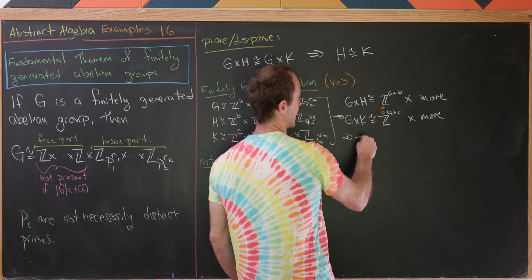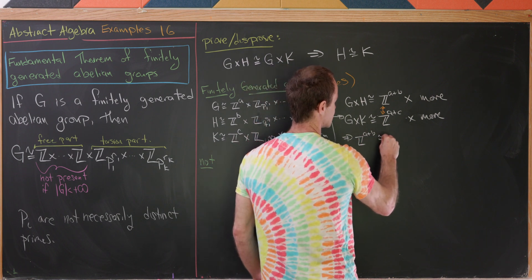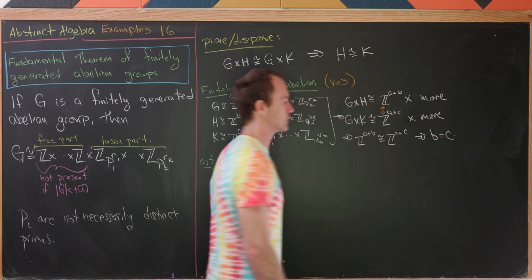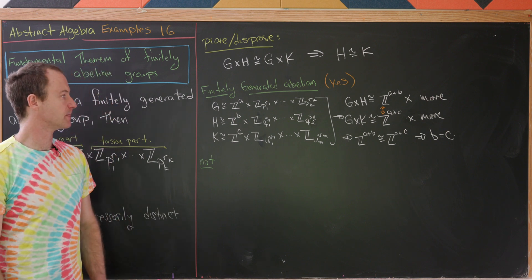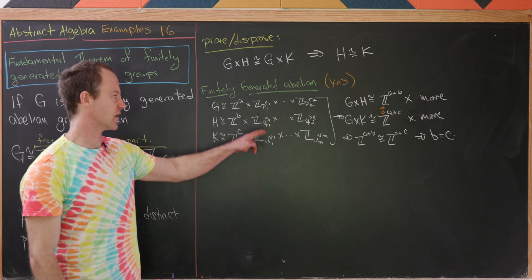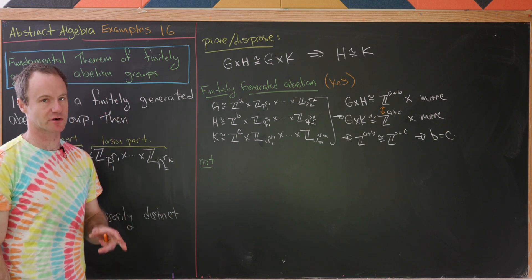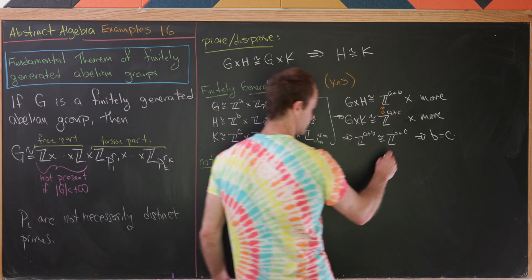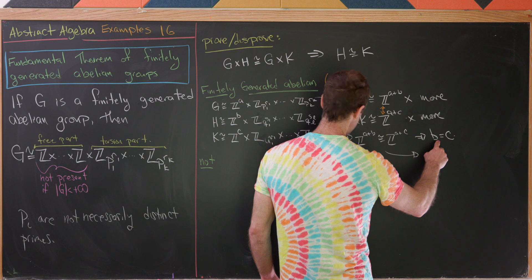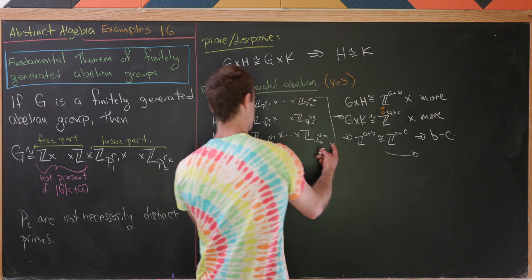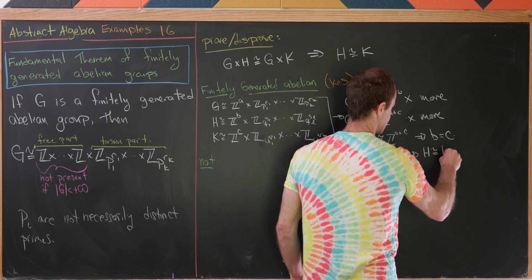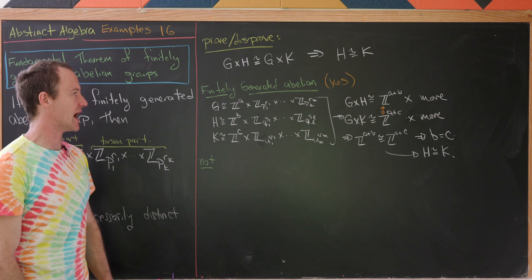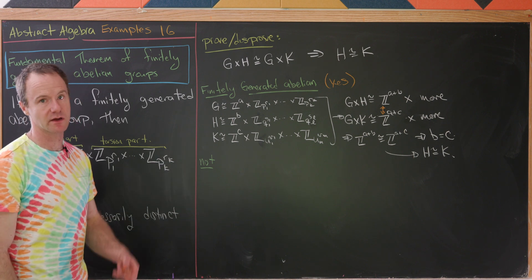So that tells us what? That Z to the A plus B is isomorphic to Z to the A plus C. But that immediately tells us that B is equal to C. And then likewise, we can show that all of these primes and all of these prime powers are also equal using the fundamental theorem of finite abelian groups. So putting that all together, we'll have B is equal to C. And then everything else is equal. So that means H is isomorphic to K. So like I said, this will not be true in the case that you have non finitely generated abelian groups even.